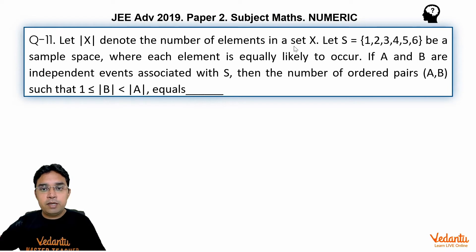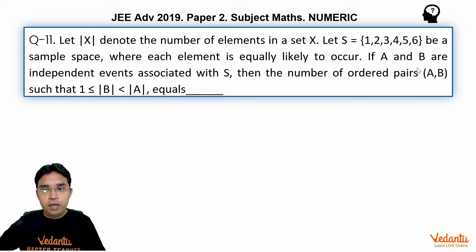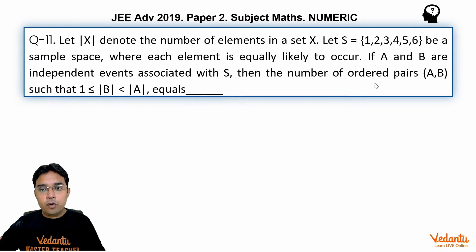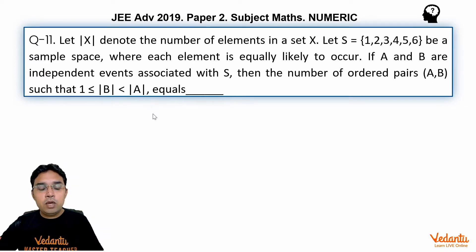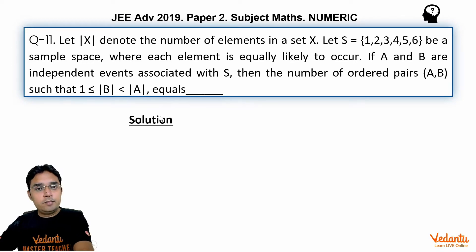Let |X| denote the number of elements in the set X. Let S = {1, 2, 3, 4, 5, 6} be a sample space where each element is equally likely to occur. If A and B are independent events associated with S, then the number of ordered pairs (A, B) such that 1 ≤ |B| < |A| equals — let us see how to solve this question.